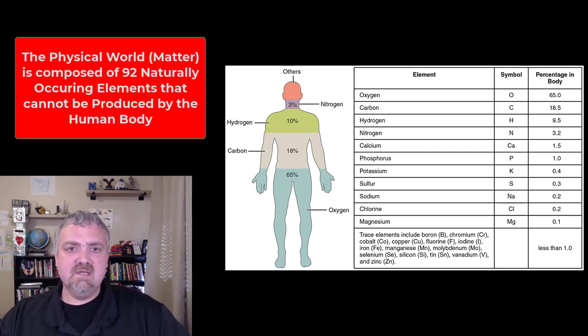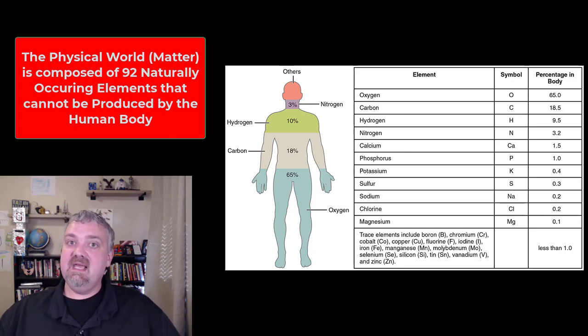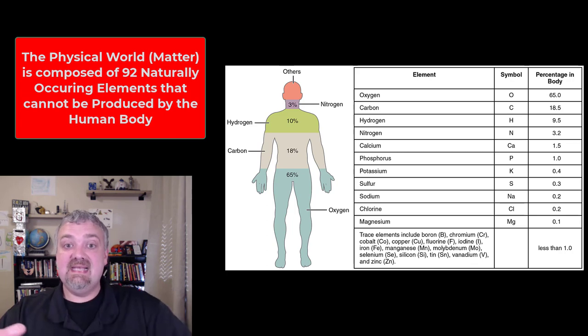All matter in the world, looking at these elements here that make up a human, all matter in the natural world comes from 92 elements. We cannot produce these elements. We can take them and use them to build a lot of other things. And the things that we can't build are called essential, meaning we have to eat them, we have to consume them because we can't produce them, but we cannot make these elements.